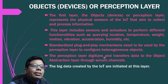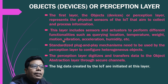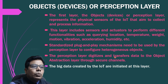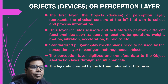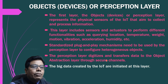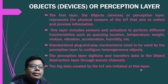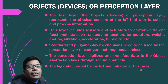The layer digitizes different parameters such as vibration, acceleration, humidity, and temperature into digital values with the help of analog-to-digital converters, and then transfers the data to the object abstraction layer above it. The big data created by IoT is initiated at this layer.